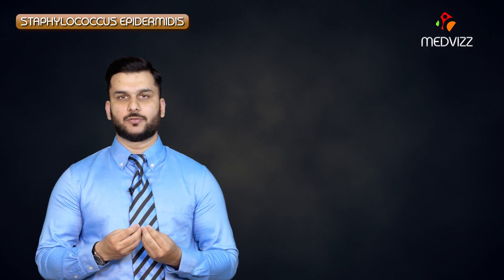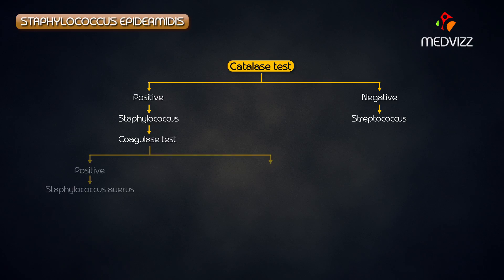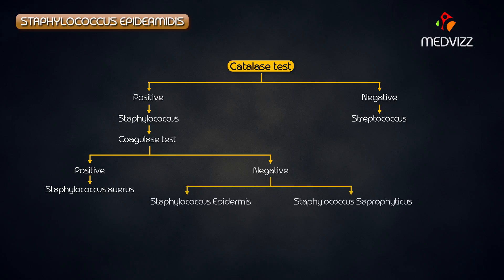To summarize the classification: Staphylococcus and Streptococcus are differentiated using the catalase test — Staphylococcus is catalase positive, Streptococcus is catalase negative. The different species of Staph are differentiated using the Coagulase test — Staphylococcus aureus is Coagulase positive, while the other two organisms are Coagulase negative. To differentiate among the Coagulase negative species, we use the Novobiocin test: Epidermidis is sensitive, whereas Saprophyticus is resistant.